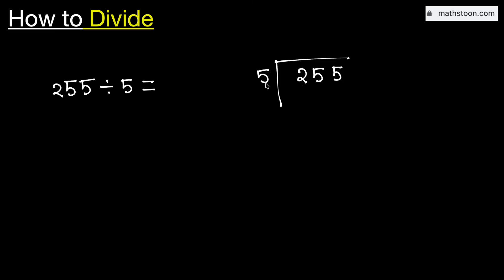From the multiplication table of 5, we know that 5 times 5 is 25. Subtract, we get 0.